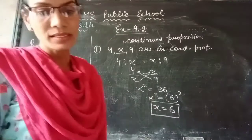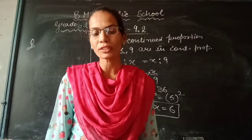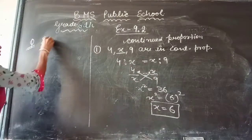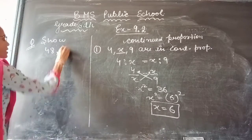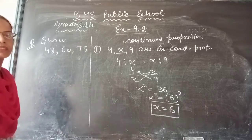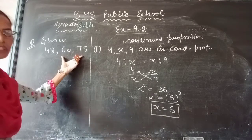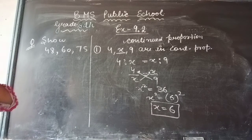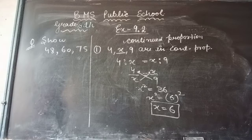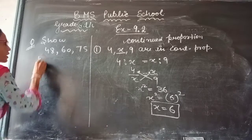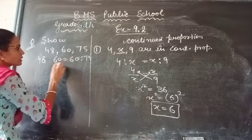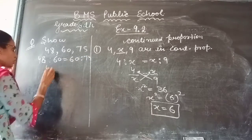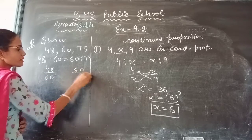Next question: show that the following numbers are in continued proportion — 48, 60, and 75. Continued proportion means the center part is repeated in both ratios. So we write 48 ratio 60 equals 60 ratio 75, that is 48 by 60 and 60 by 75.